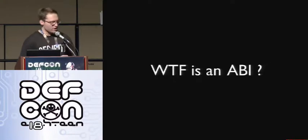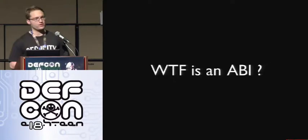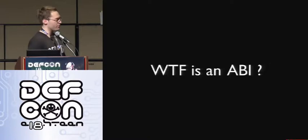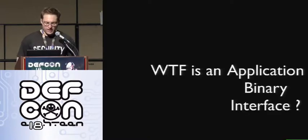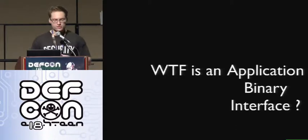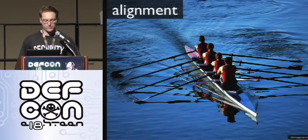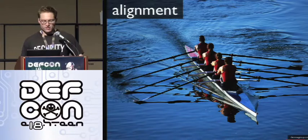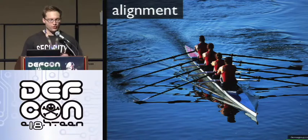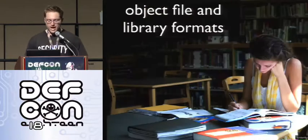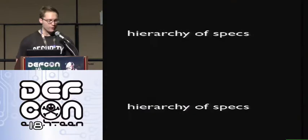So to actually do this we need to know a few things. We need to know about the ABI for the system we're working on. The question we need to start with though is what the fuck's an ABI? An ABI is an application binary interface. What does an ABI actually tell us? It tells us about alignment — the alignment of the program stack, data types, stuff like that. It tells us about calling convention, how functions are called, where arguments live, how that stuff works, and about object file and library formats.